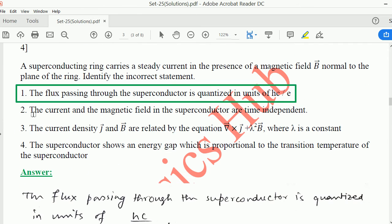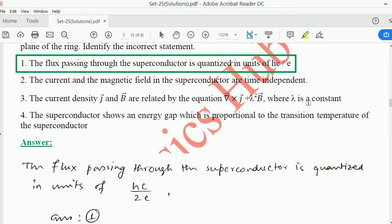Next, question number 4. A superconducting ring carries a steady current in the presence of a magnetic field B normal to the plane of the ring. Identify the correct statement. The first statement we see: the flux passing through the superconducting ring is quantized in units of hc by e. But as you know, the flux passing through the superconductor is quantized in hc by 2e. But here you are given hc by e. So this is the incorrect statement.